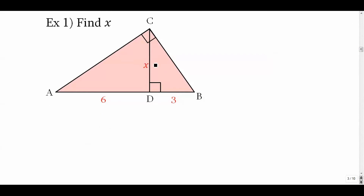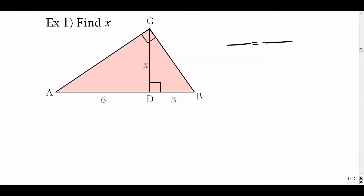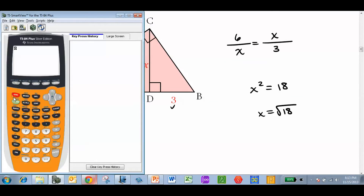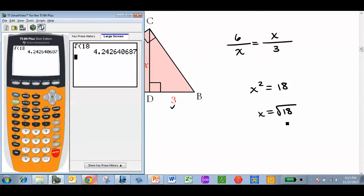Here we have a right angle at the top and an altitude connecting to the base at 90 degrees — you must have both to use this theorem. To find the altitude value x, put x in the bottom-left and top-right of the proportion, and put 6 and 3 in the other slots. Cross-multiplying gives x = √18 ≈ 4.243. We only want the positive square root since we're dealing with actual lengths.